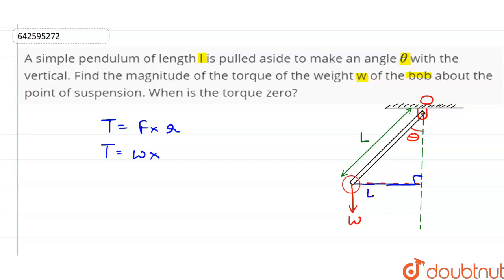And this is equal to L sin theta. So we can write R as L sin theta. Therefore, torque about the point of suspension O is W L sin theta. This is the answer to the first part of the question.